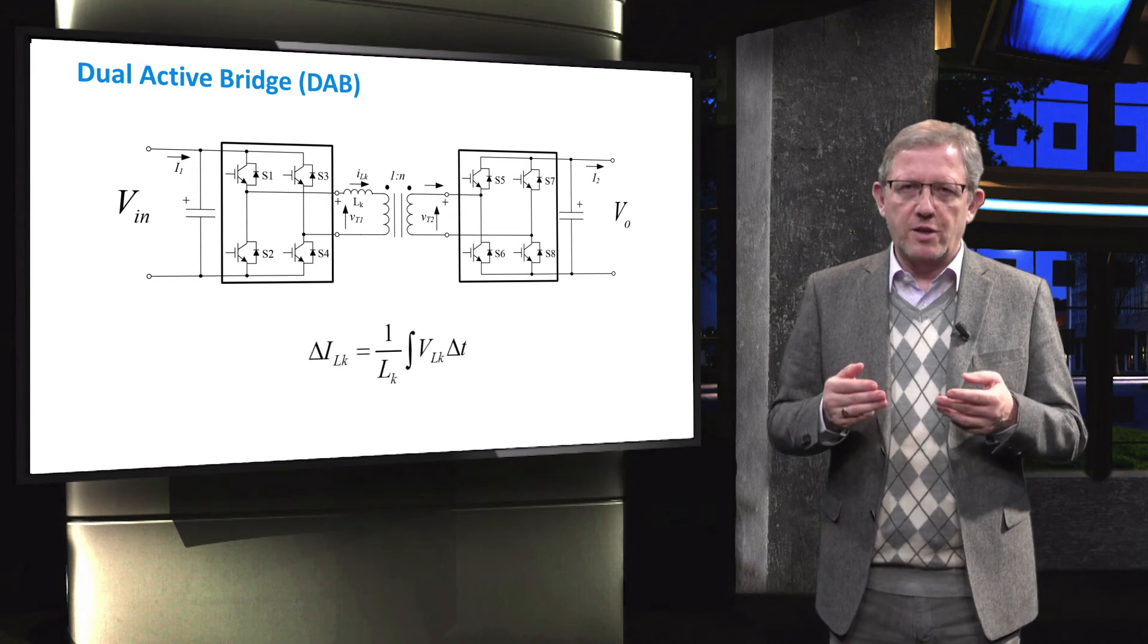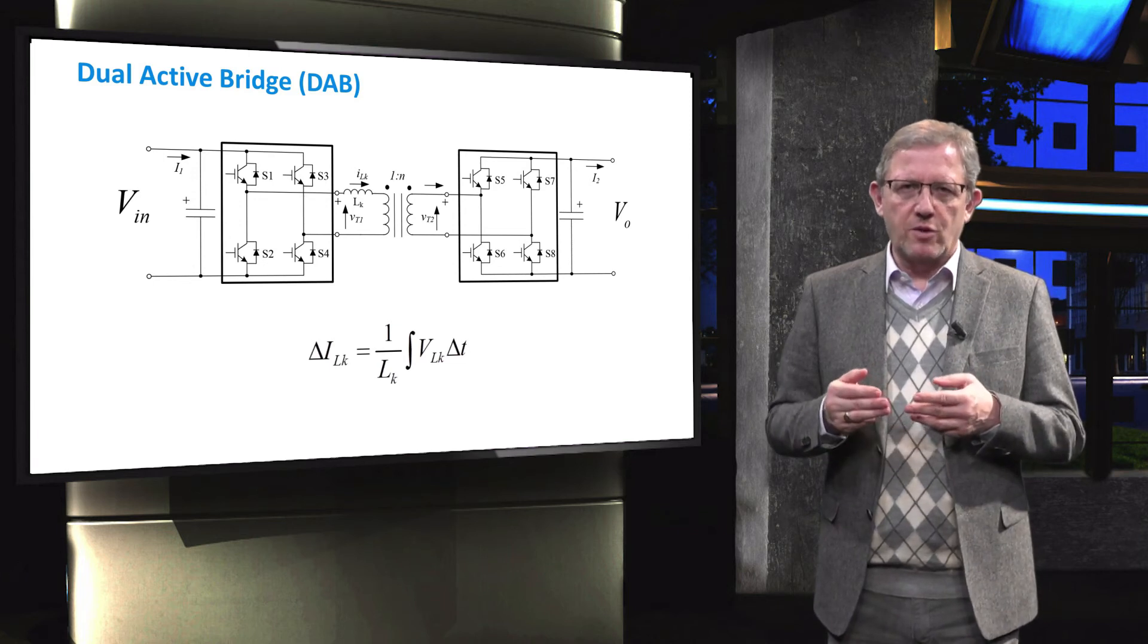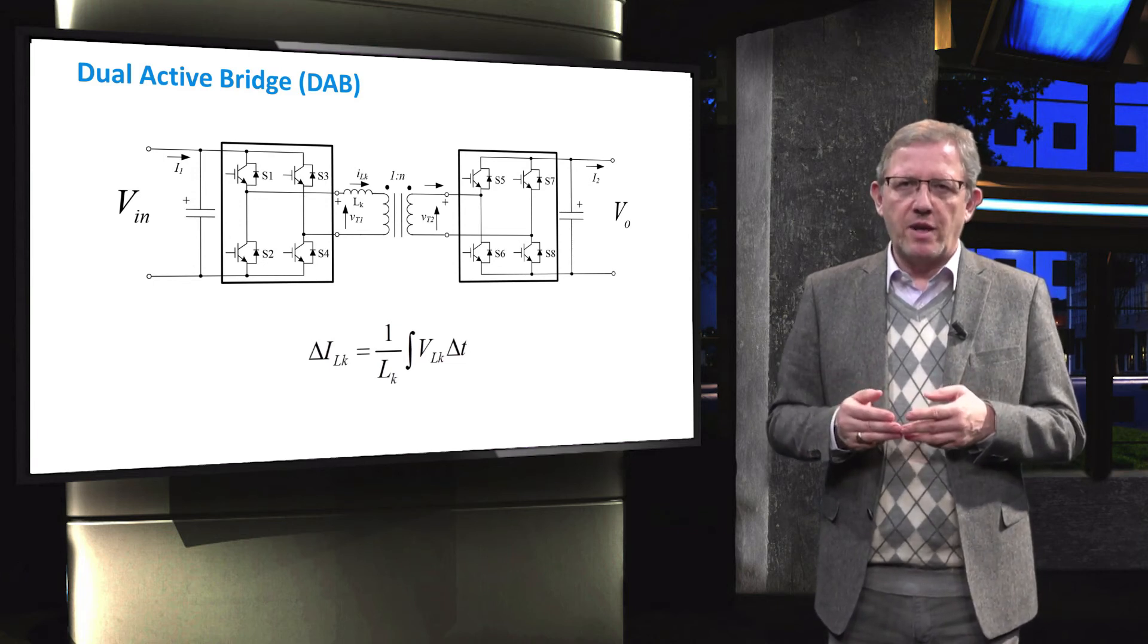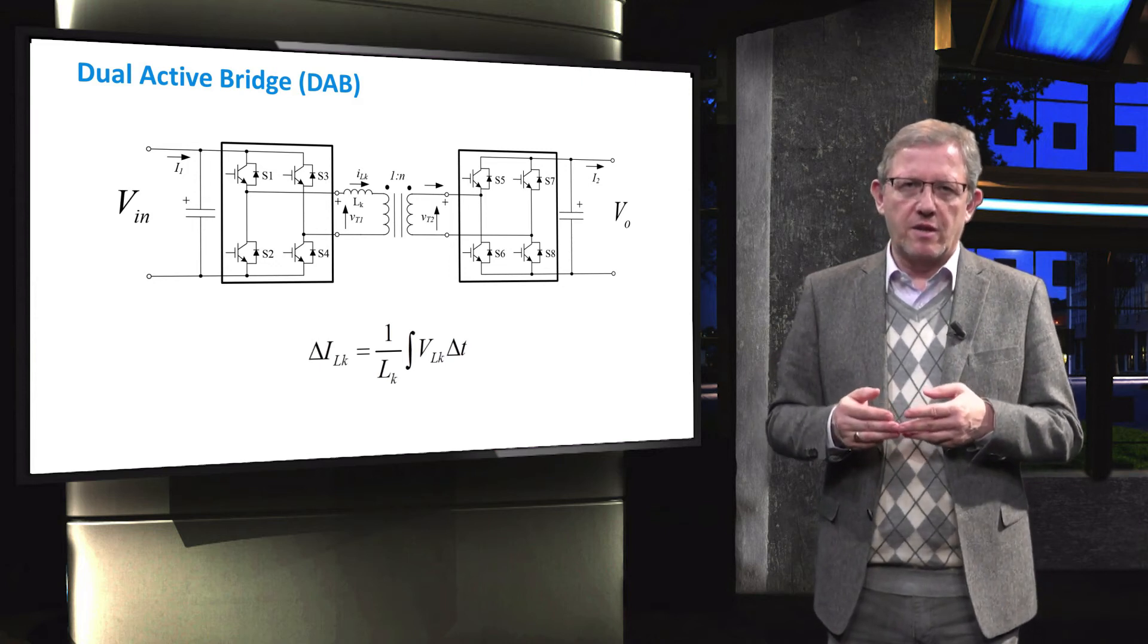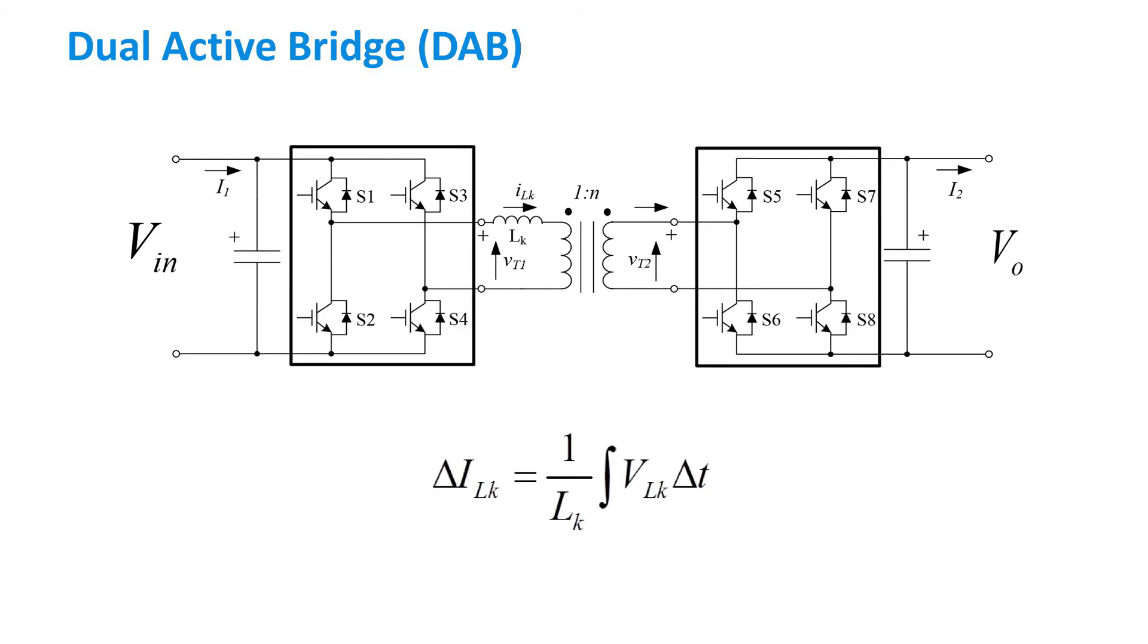In the dual active bridge converter, the input DC voltage, VIN, is primarily converted to the AC voltage through a DC-AC inverter. Then this AC voltage is flexibly stepped down or up using a high frequency transformer. Finally, the transform AC voltage is converted to the output DC voltage, Vout, through an AC-DC converter.